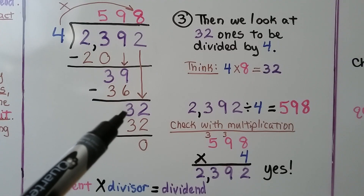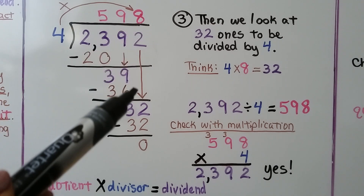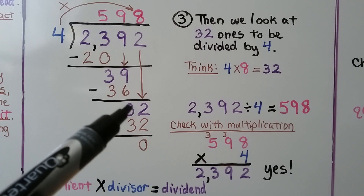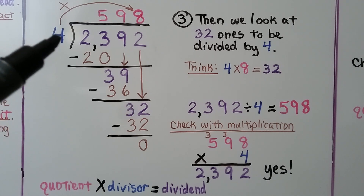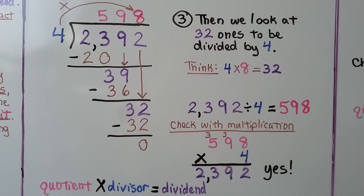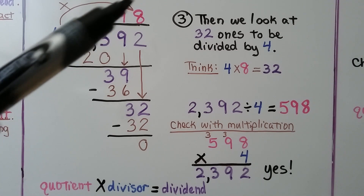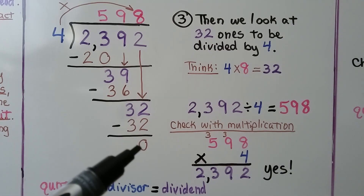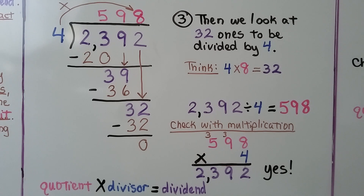We did our subtraction, we've got a 3, and now it's the 2's turn to come down. We have a 32 and we look at the 32 ones to be divided by 4. We think 4 times 8 is equal to 32. We put an 8 above the ones place, and 4 times 8 is 32. We subtract it and get 0 as a remainder. It divided evenly, so 2,392 divided by 4 is equal to 598.